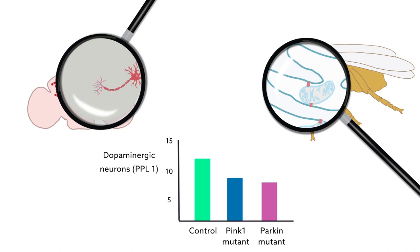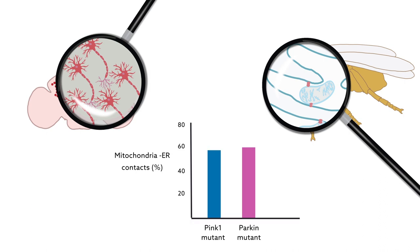Reducing the number of contacts, though, can prevent that loss. When scientists experimentally lowered the amount of mitofusin in the mutants, the number of contacts fell, and the neuron number jumped back up.